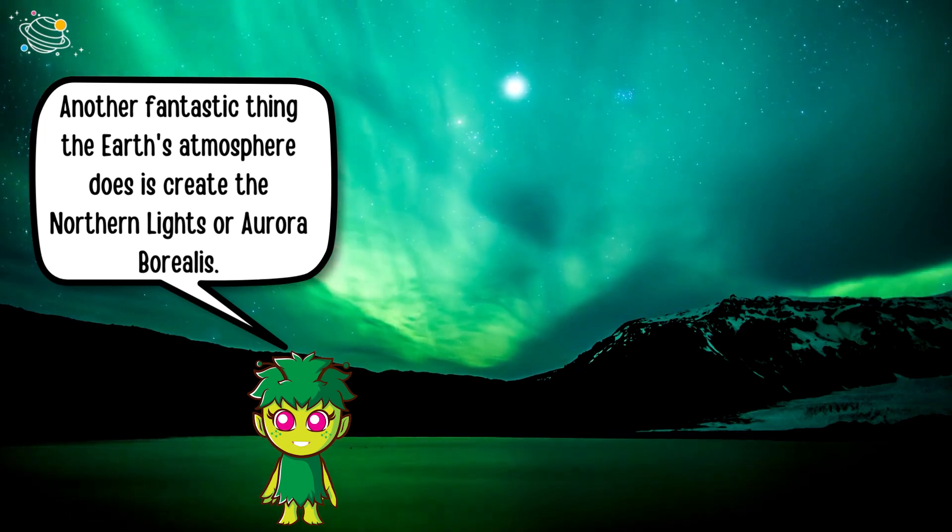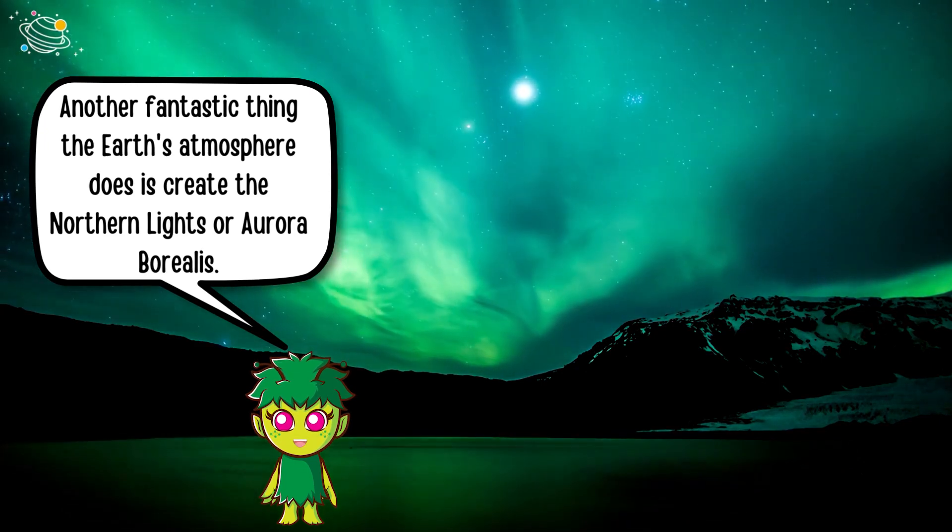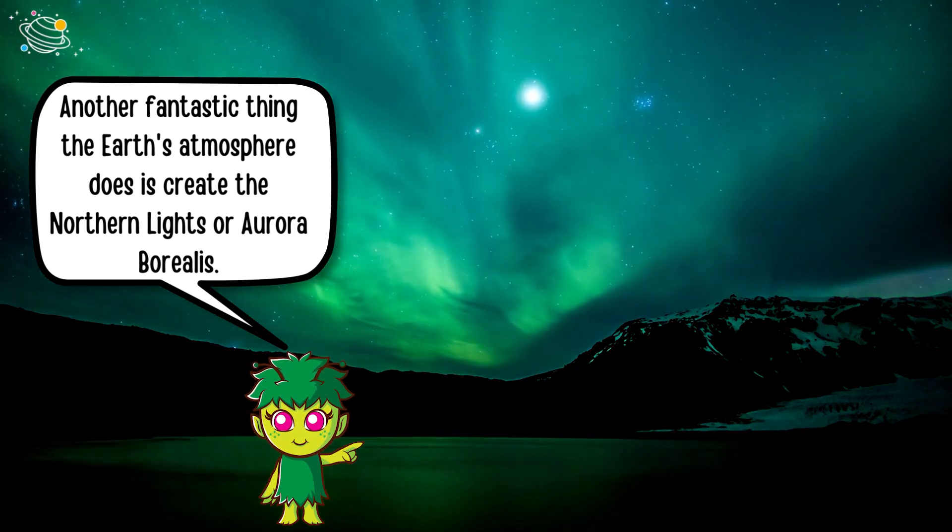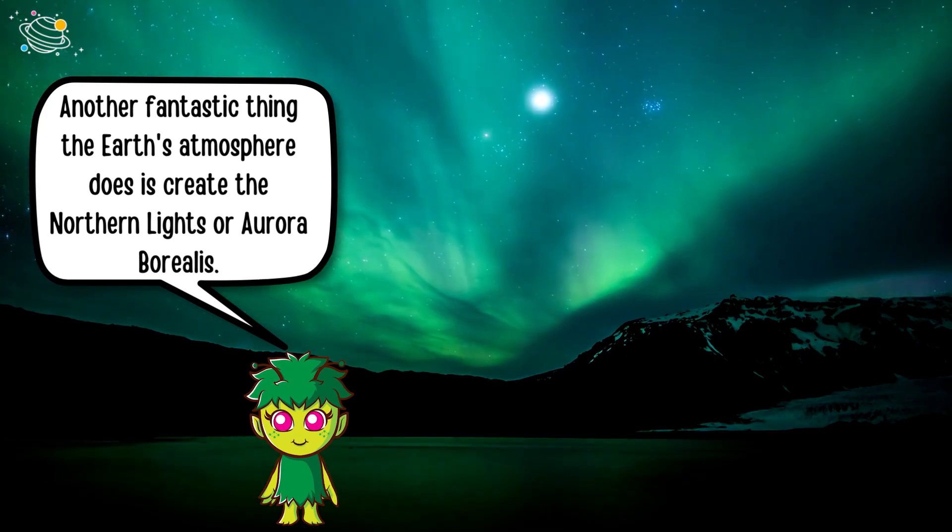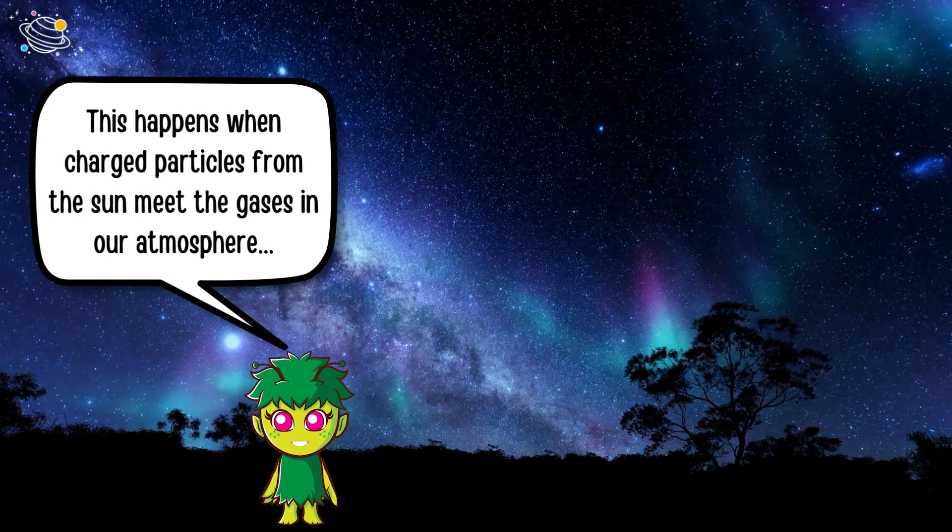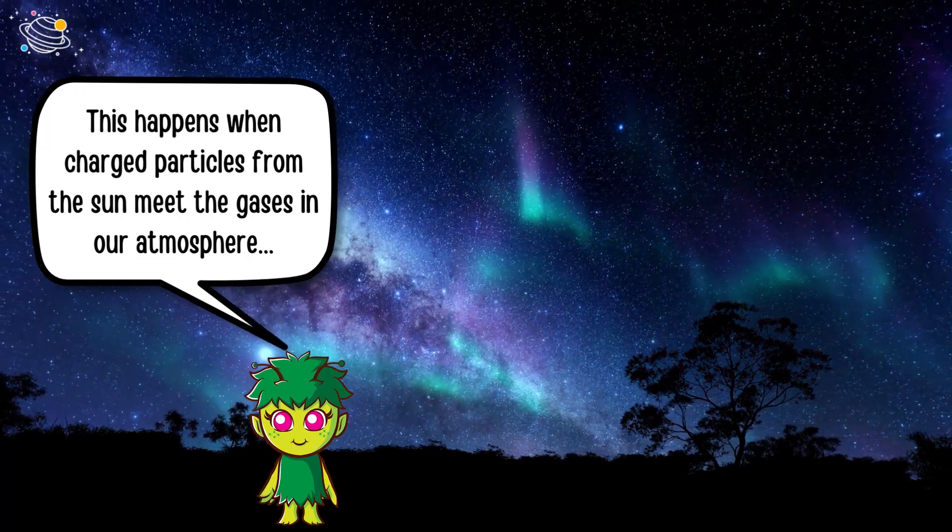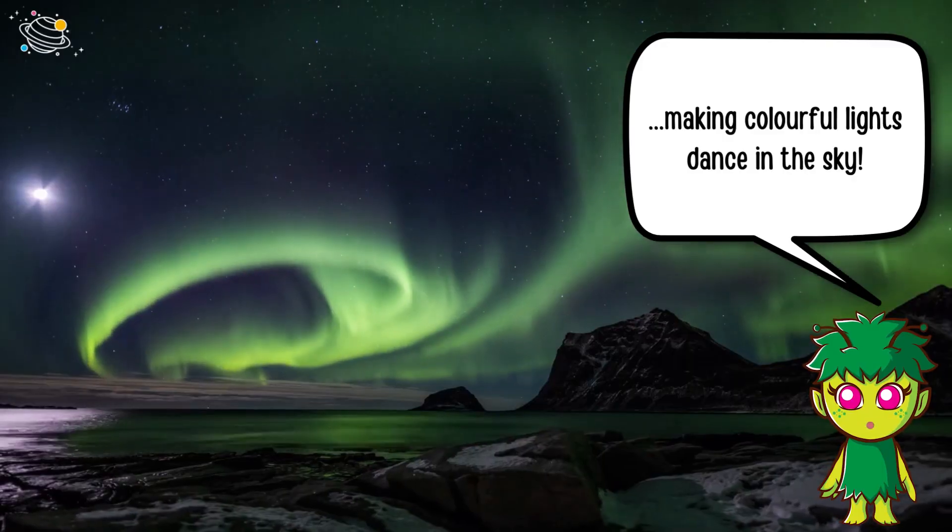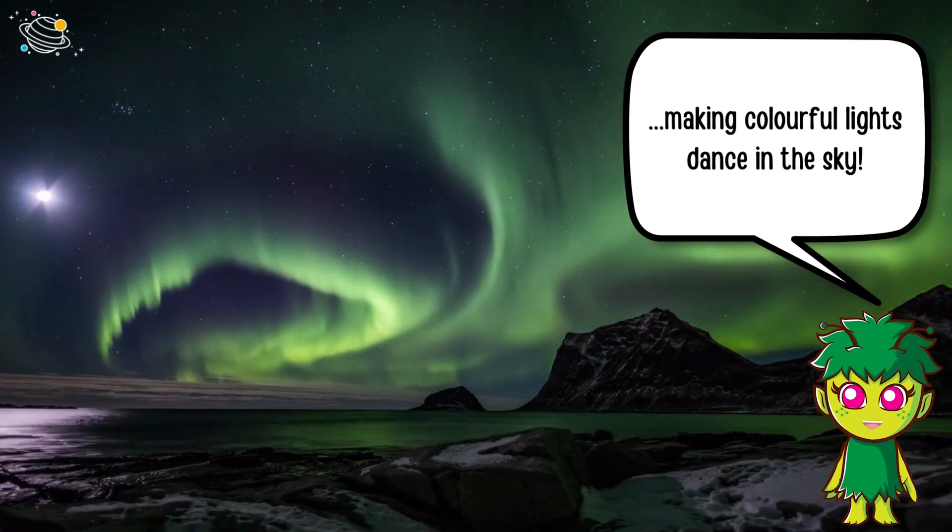Another fantastic thing the earth's atmosphere does is create the northern lights or aurora borealis. This happens when charged particles from the sun meet the gases in our atmosphere, making colorful lights dance in the sky.